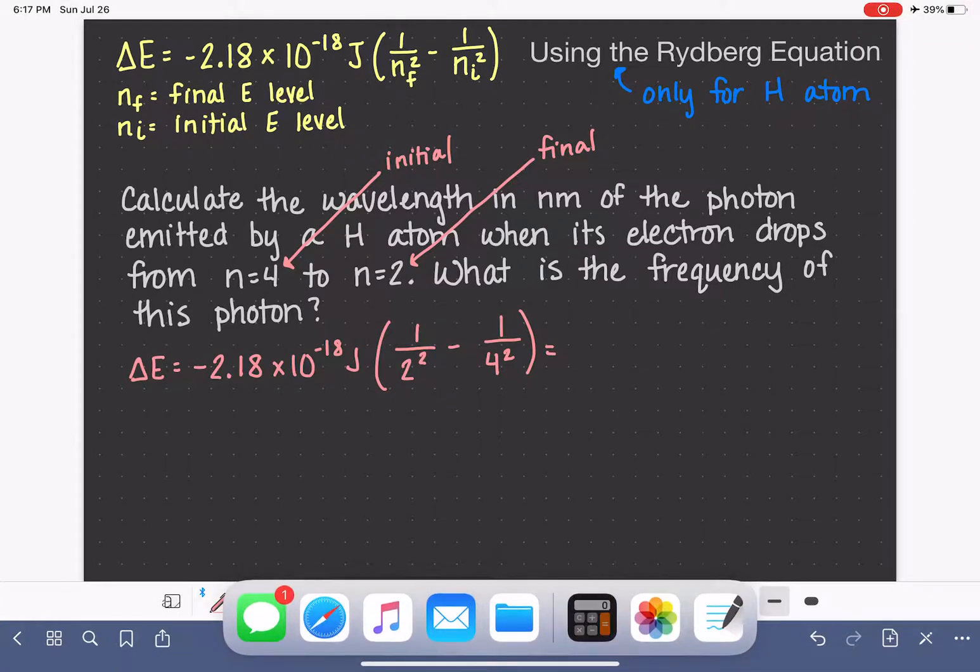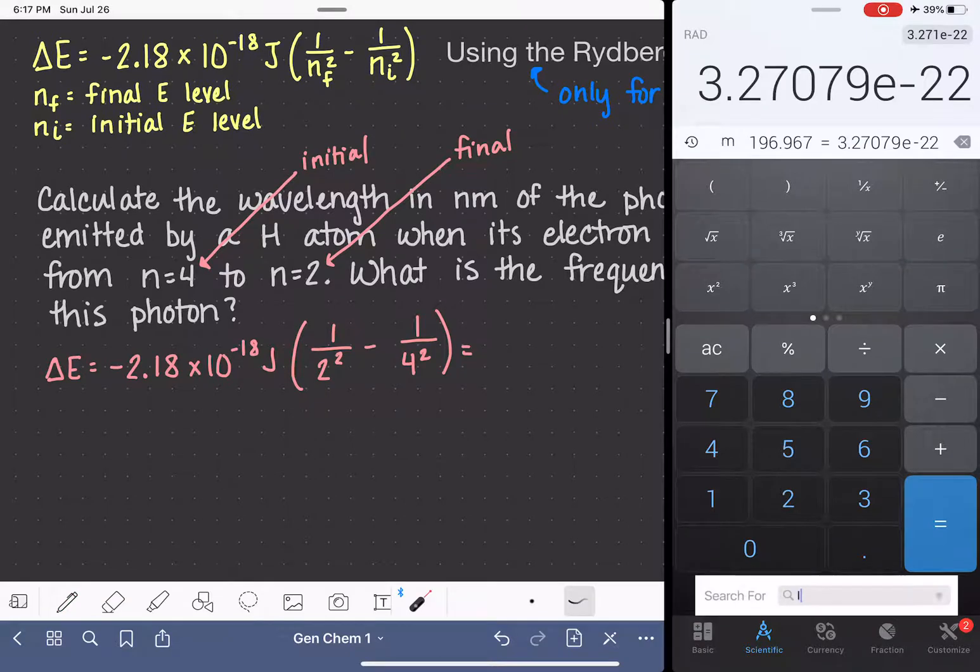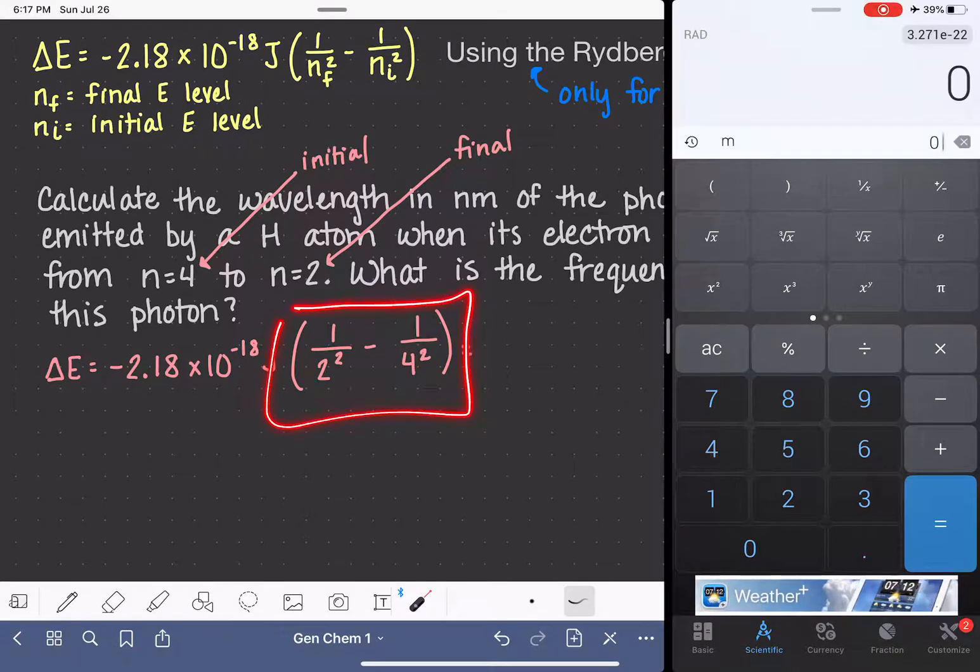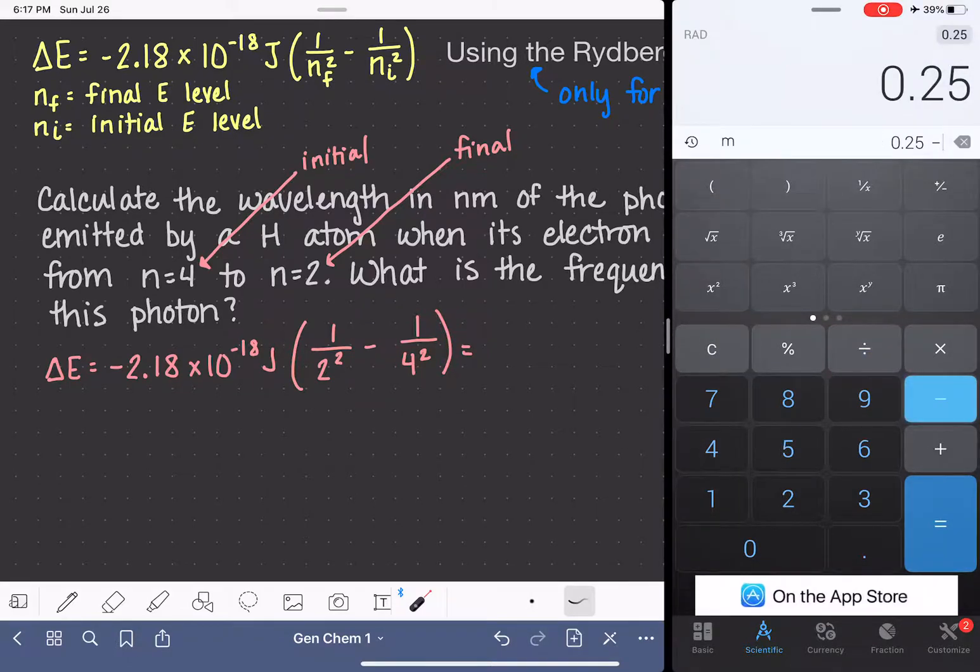So let's get the calculator out, and we'll plug these numbers in. Now I'm going to do, because I don't have a graphing calculator here, I'm going to do this part of the equation first, and then I'll multiply by that number right there. So I have, for this, I'm going to do 1 divided by 4, and for this, I'm going to do 1 divided by 16. 1 divided by 4 minus 1 divided by 16.